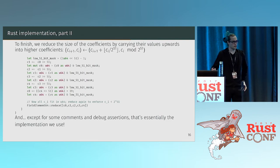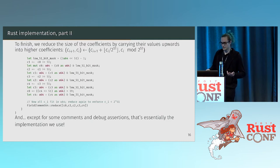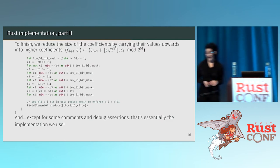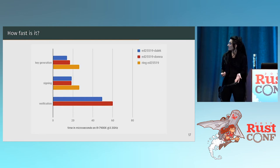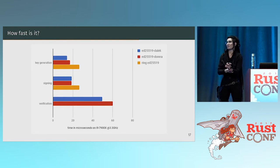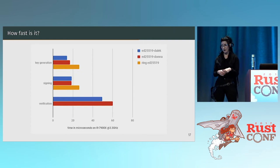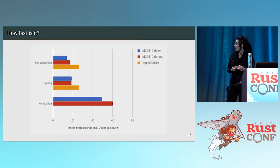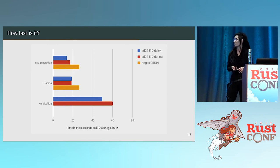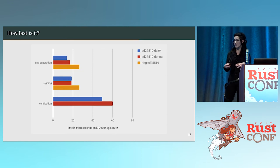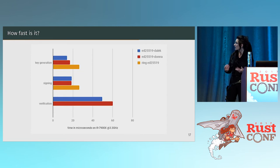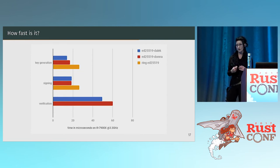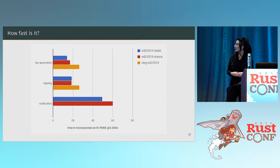We just throw it at LLVM and see what happens. How does it compare? It turns out it's really, really fast. N25519 Donna is an optimized assembly implementation that Tor currently uses by default. Our performance is comparable to Donna and slightly better for things like verification. We also include Ring — a higher-level Rust library that implements protocols by wrapping BoringSSL's assembly implementations — for context, since it's also pretty fast.